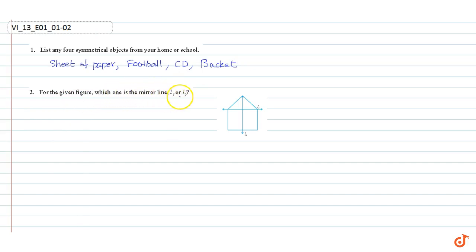We can see that if the figure is folded about line l2, then the left part covers exactly the right part. So l2 is the symmetrical line.